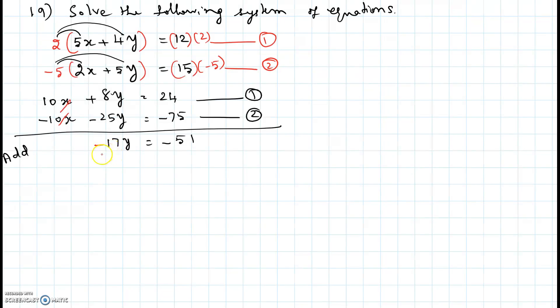Now we are going to divide both sides by negative 17 to isolate the y. You get y equal to negative over negative, that makes it positive. 17 goes into 51 three times, so y equal to 3.